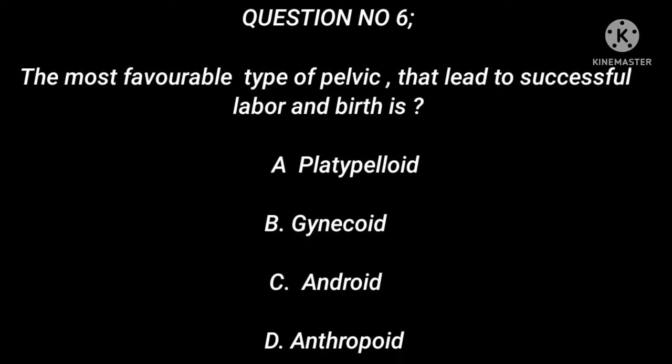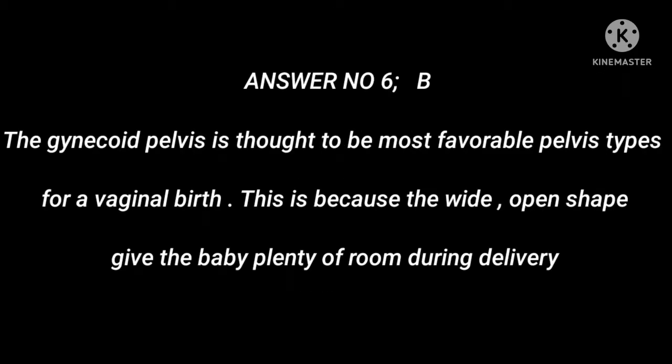Question number 6. The most favorable type of pelvis that leads to successful labor and birth is: A. Platypelloid. B. Gynecoid. C. Android. D. Anthropoid. Answer number 6: B. The gynecoid pelvis is thought to be the most favorable pelvis type for a vaginal birth because the wide, open shape gives the baby plenty of room during delivery.